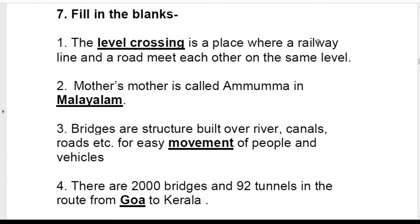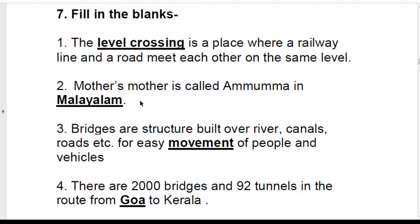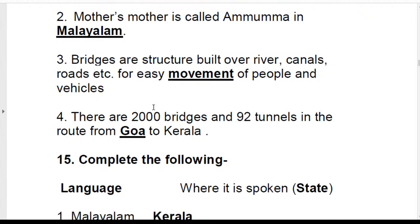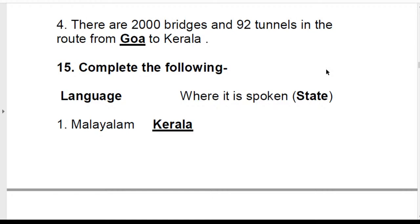Fill in the blanks — point one: a level crossing is a place where a railway line and a road meet each other on the same level. We have already discussed this. Next: mother's mother is called 'Ammuma' in Malayalam. Bridges are structures built over rivers, canals, roads, etc. for easy movement of people and vehicles, as discussed before.